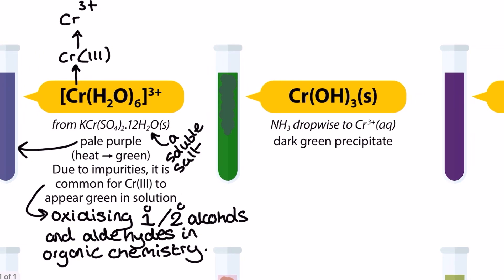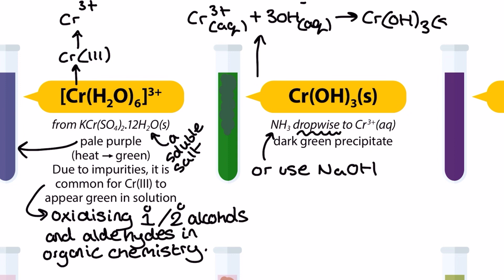Next up we are looking at a precipitation reaction and it takes place when dropwise alkali is added to our previous solution. We can either use ammonia or a named hydroxide here like sodium hydroxide and the ionic equation is the same either way. Here that chromium 3 plus ion is reacting with hydroxide ions to form a dark green precipitate. It's common in the exam to need to provide state symbols for this one so watch out.